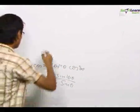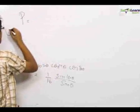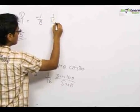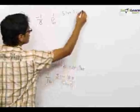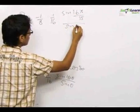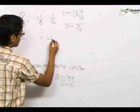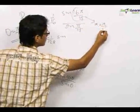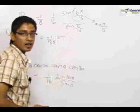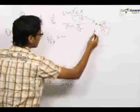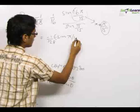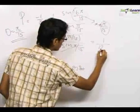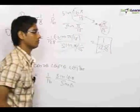With θ = π/15, our product becomes −(1/8) · (1/16) · sin(16π/15) / sin(π/15). We write 16π/15 as π + π/15, and sin(π + θ) = −sin θ, so sin(16π/15) = −sin(π/15). This cancels with sin(π/15) in the denominator, giving us the final answer of 1/128.